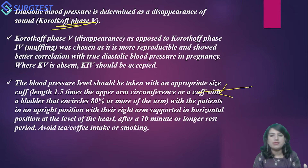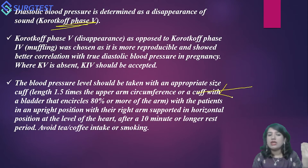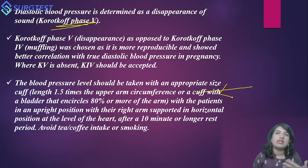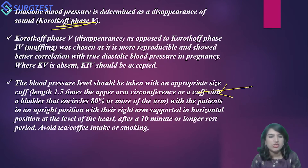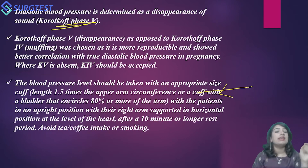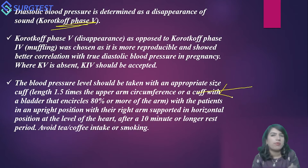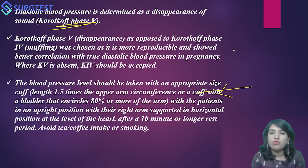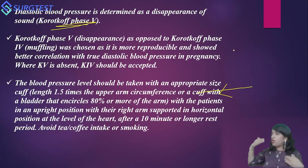To summarize: cuff length should be 1.5 times the upper arm circumference, with the bladder encircling 80% or more of the upper arm. The patient should be in an upright or lateral position at 45-degree reclining, with the arm supported horizontally at heart level, and BP should be measured after a 10-minute or longer rest period. Avoid tea, coffee, or smoking before measurement as they increase blood pressure recordings. When sitting, the back should be rested on the chair and the legs uncrossed and supported on the ground.